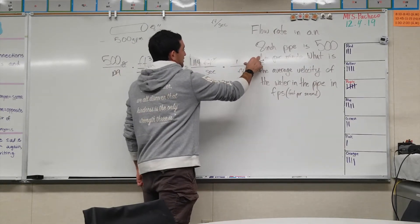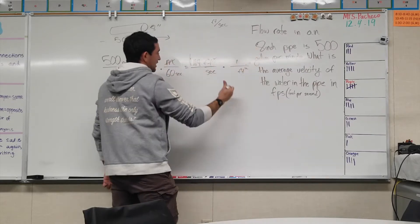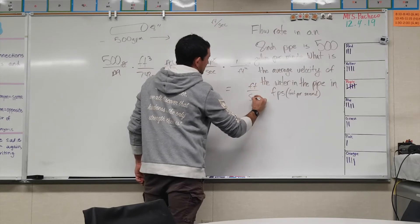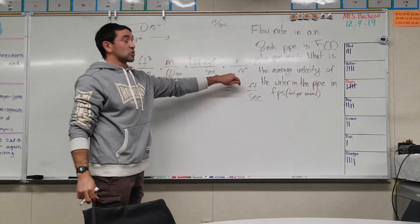When there's a square here this will cancel out and it'll just be the solution, which will be feet per second. So we just need to figure out a square foot value.